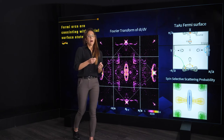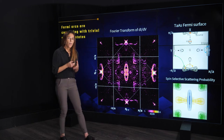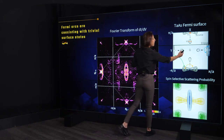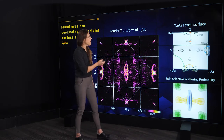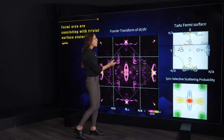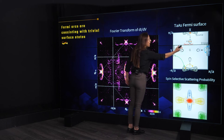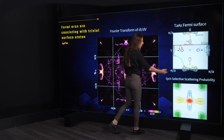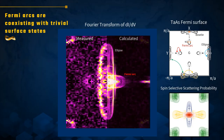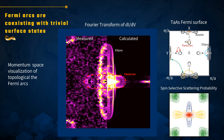What we've seen so far are scattering processes between trivial states. Now we should remember that we wanted to identify the topological state signature — the topological Fermi arcs. Every scattering process involving these states will give a signature of the topological states on the surface. Calculating all scattering processes between the Fermi arc and the trivial tail gives a red QPI that peaks behind the ellipse. Zooming in and putting the calculation and measured data side by side, we see perfect agreement, meaning this QPI is a visualization of the topological Fermi arcs in momentum space.